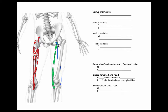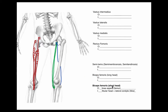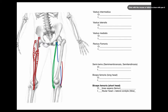We also have the biceps femoris short head — called short head because it's shorter. I'll make it a different color so you can see it. This one is going to originate on the linea aspera and come down and insert in the same spot as the biceps femoris long head.